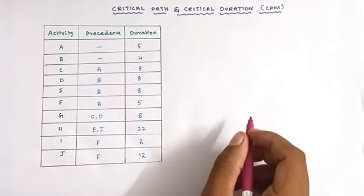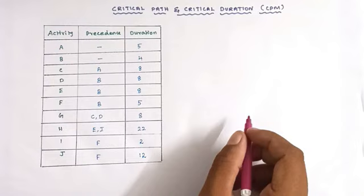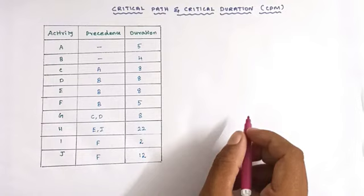Hello friends, today we are going to see how to calculate the critical path and critical duration. First we have to know what is meant by critical path and critical duration. In a network path of any project, the longest duration is called critical duration, and the corresponding path having the longest duration is called the critical path.